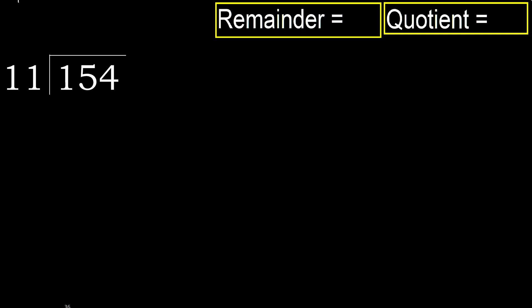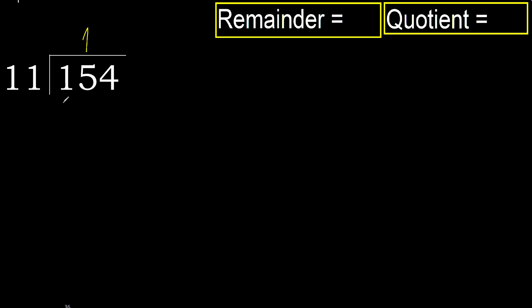154 divided by 11. 1 is less, therefore next. 15 is not less, therefore work with 15. 11 multiplied by which number is nearest to 15 but not greater? 11 multiplied by 2 is 22, which is greater. Multiplied by 1, 11 is not greater.